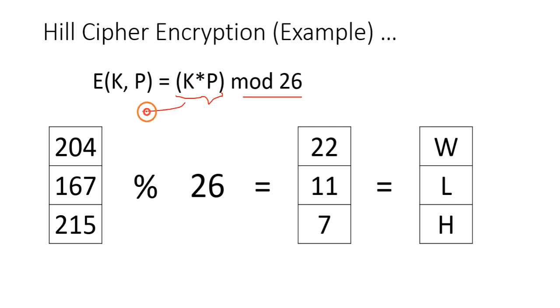Now we are performing the mod operation. The result of this is this column vector. Now we are performing mod 26 so that we will get 22, 11, 7. And 22 in our alphabet is W, 11 is L, and 7 is H.